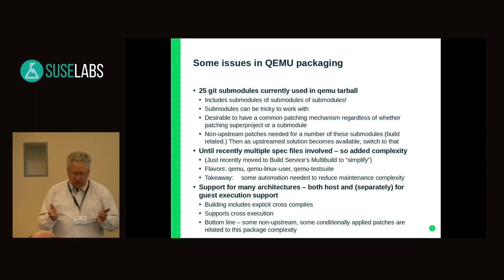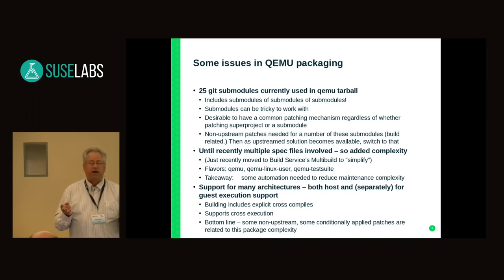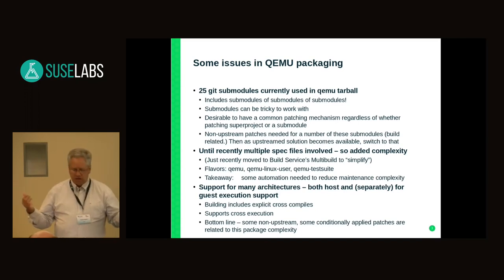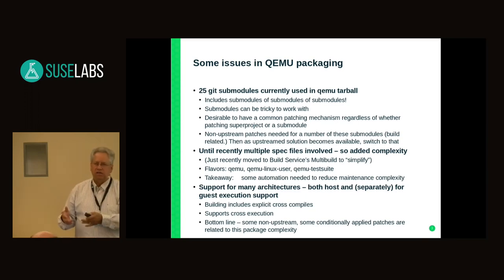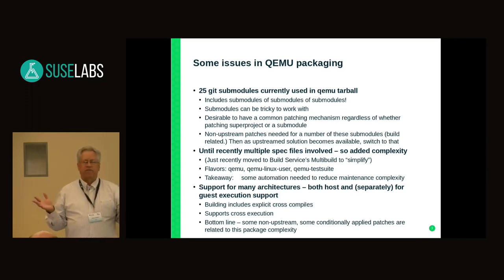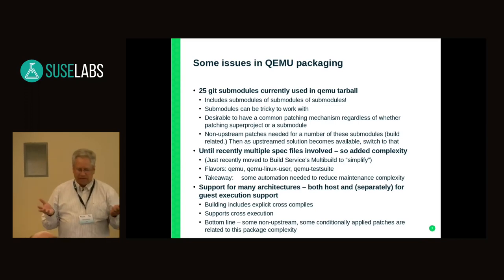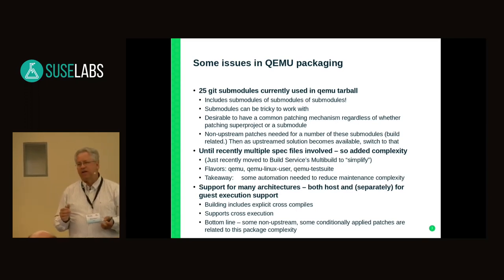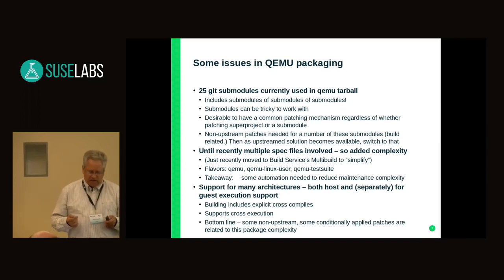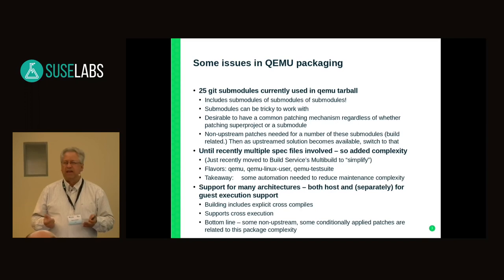Until recently, we basically had three different spec files because we had QEMU split out into different sub-functions: the main QEMU function for system emulation, QEMU Linux user for instruction emulation built on top of the syscalls layer, and then a test suite that we package up. Those were all separate spec files, so we had to keep them all in sync. I finally got around to using the build service's multi-build function, and that's worked out well, though it's made a more complicated spec file because all those different usages have to be represented in a single spec file now.